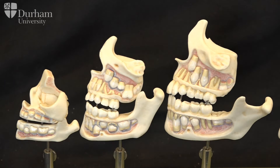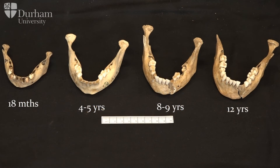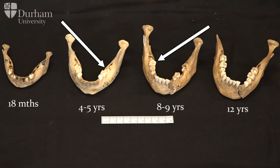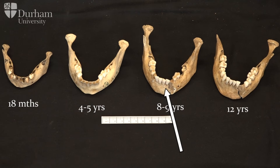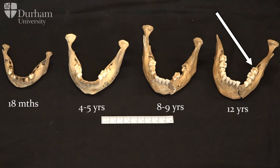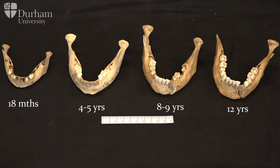The first permanent molar will erupt at about six years of age — you can see it forming in the jaw on this individual. This is followed by the permanent incisors, which erupt between about six to eight years of age, followed by the canine, premolars, and second molar. On this individual at the end you can see that the second permanent molar has erupted, so we know this individual is about 12 years of age. The third permanent molars, or wisdom teeth, don't erupt until about 18 to 22 years of age, but this is really variable — some people don't have third molars at all, whilst for others the teeth are impacted or fail to erupt.